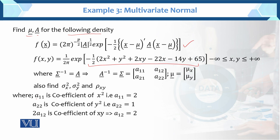Here, a11 is the coefficient of x squared, which is equal to 2. And a22 is the coefficient of y squared, which is equal to 1.